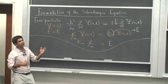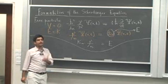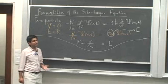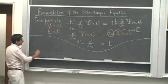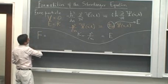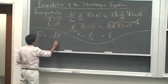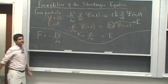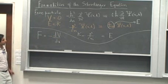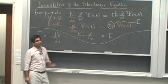Let's move to the next rung of the ladder — let's make it a bit more complicated. Suppose that there is a force acting on the particle. When there is a force acting on the particle, its energy cannot only be kinetic; there has to be some potential energy as well. If the force is conservative, the potential energy is given by: force equals minus dV over dx. Somehow we now have to introduce the potential energy into this equation.